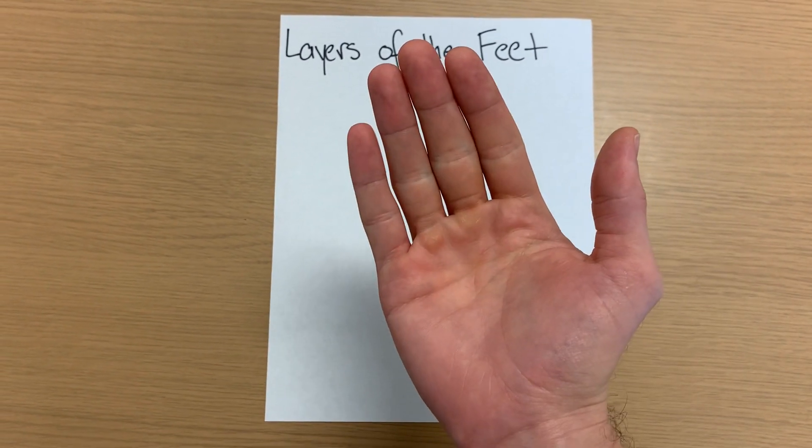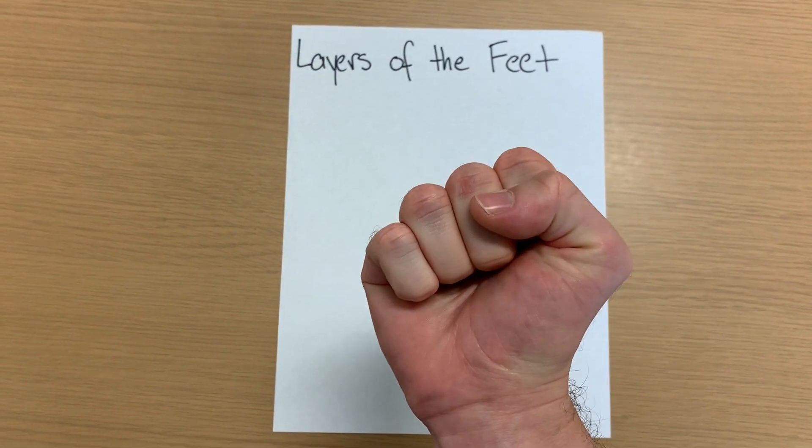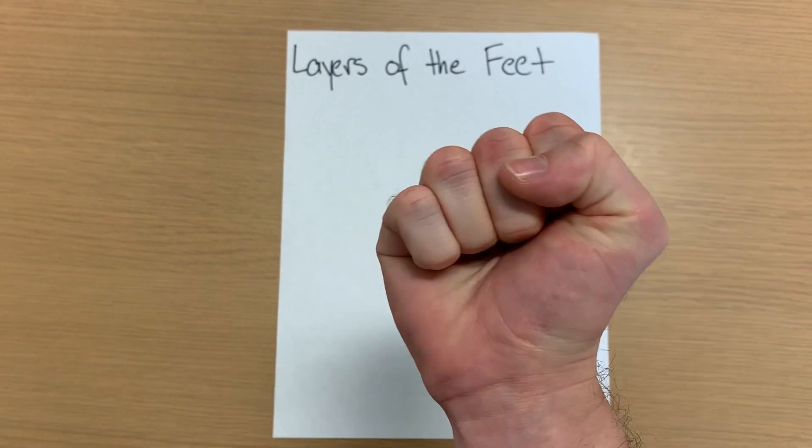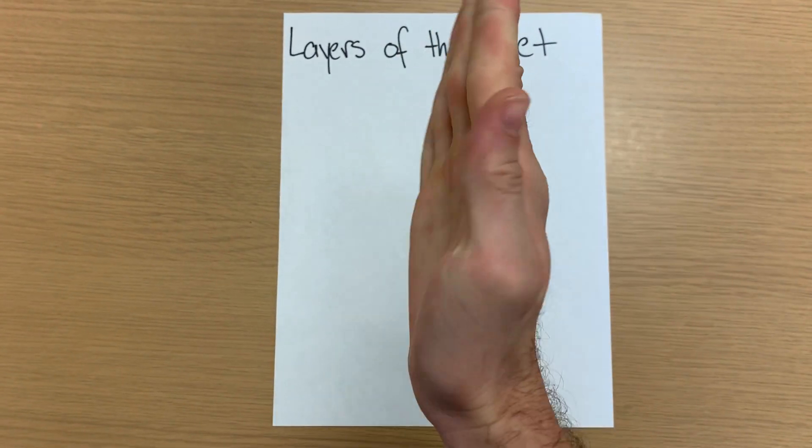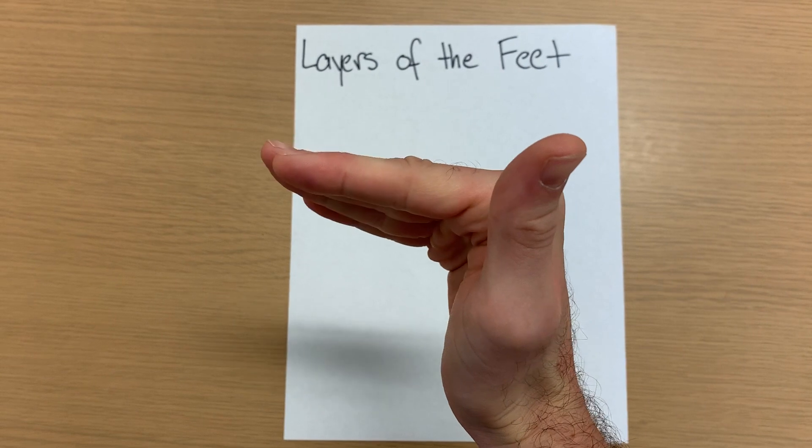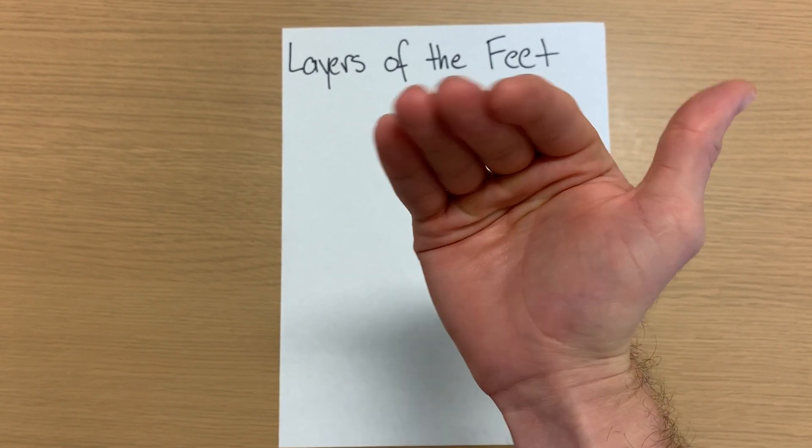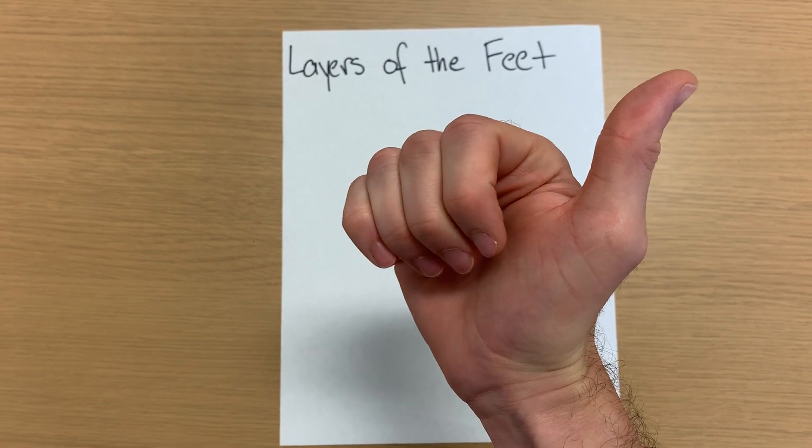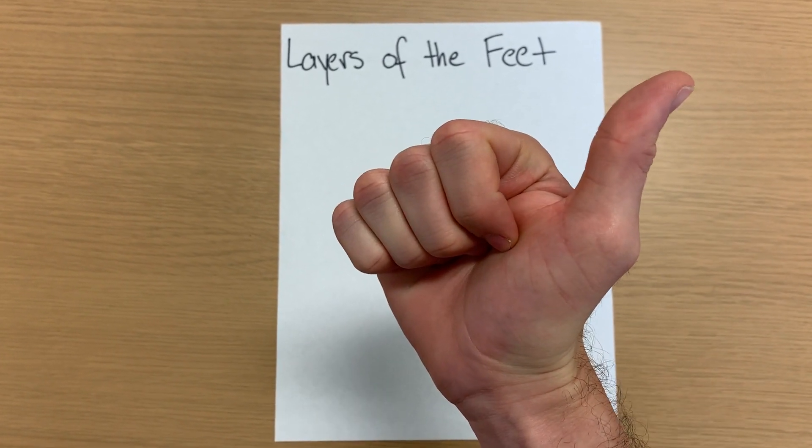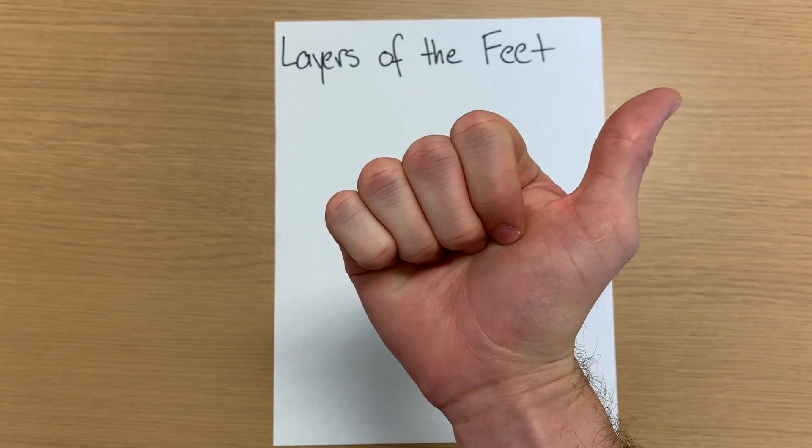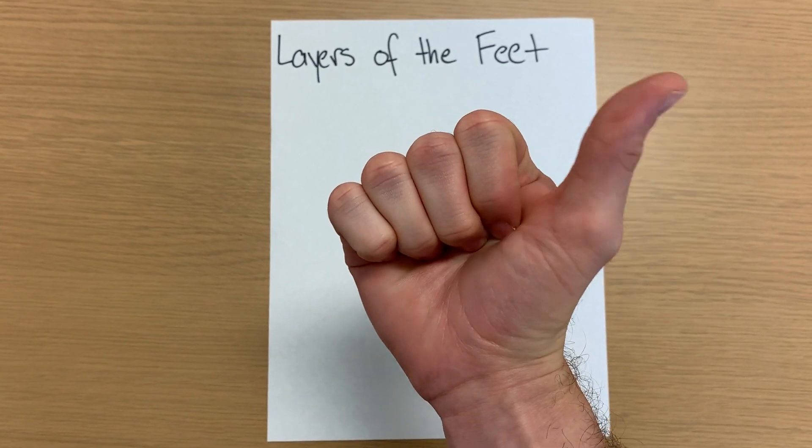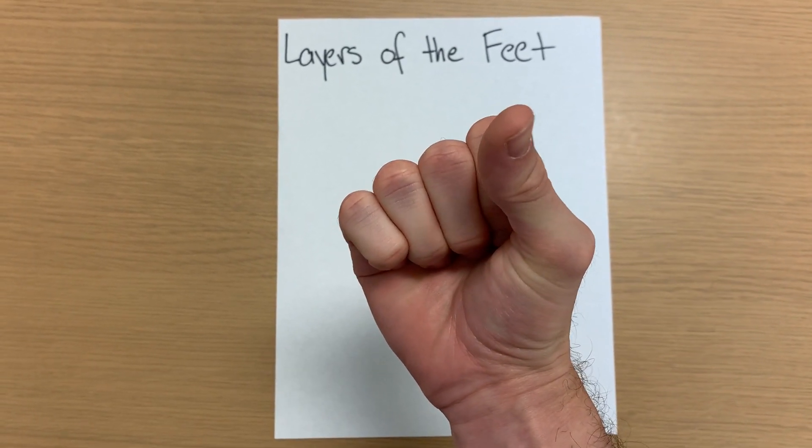Now for our second muscle layer, we make a fist like this. And to make that fist, we have our lumbricals, which is really nice because that's what the lumbricals do in our hands as well. We have the tendon of the flexor digitorum longus. Then attached to that tendon, we have our quadratus plantae muscle.